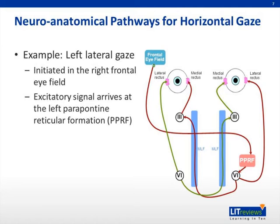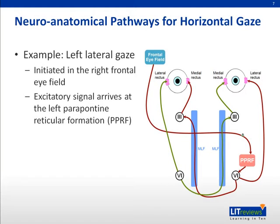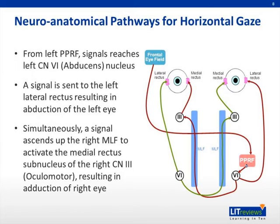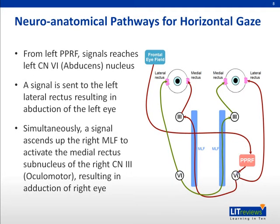In this example, the right frontal eye field initiates left lateral gaze. The excitatory signal arrives at the left paramedian pontine reticular formation complex. From the left PPRF, the signal advances to the left abducens nerve, activating the left lateral rectus, resulting in abduction of the left eye. Simultaneously, a signal is sent via the right MLF to the medial rectus subnucleus of the right oculomotor nerve, resulting in adduction of the right eye. Thus, conjugate gaze to the left is achieved.